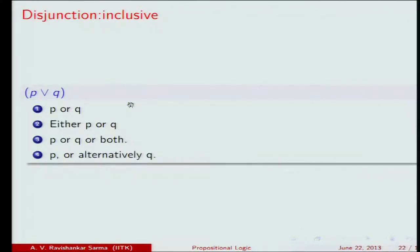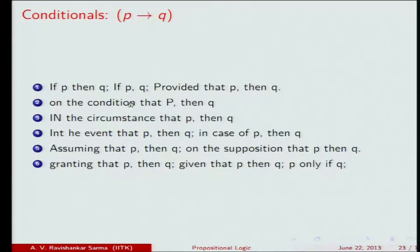Disjunction includes phrases like 'either P or Q,' 'P or Q,' 'P or both,' and 'P or alternatively Q' — all are simple disjunctions.